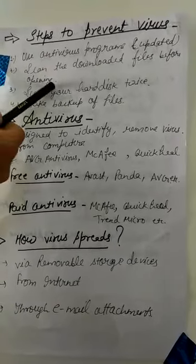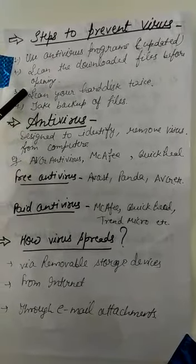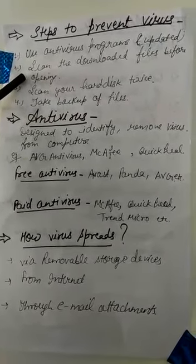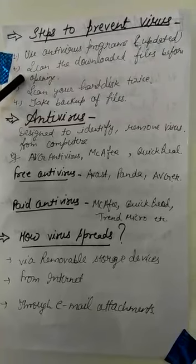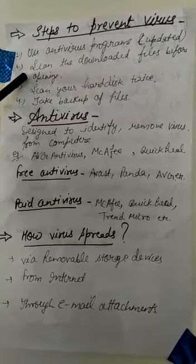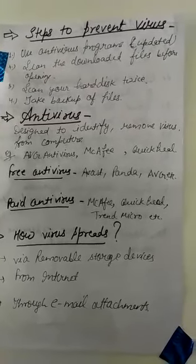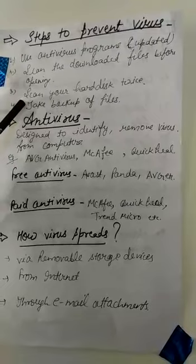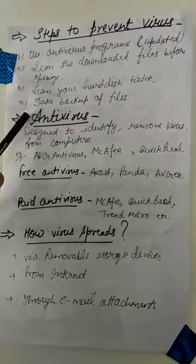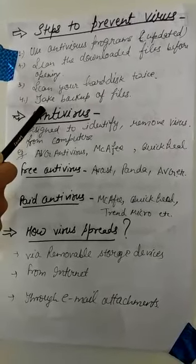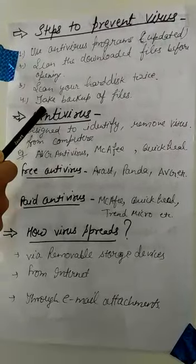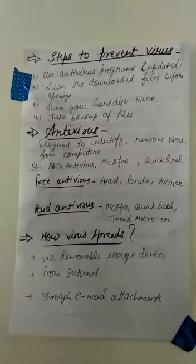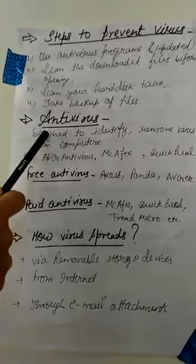Number two: scan the downloaded files before opening — whatever files you are receiving in your emails or elsewhere, scan them first before opening. Number three: scan your hard drive twice a month. Number four: take a backup of your files so that you do not lose important data.